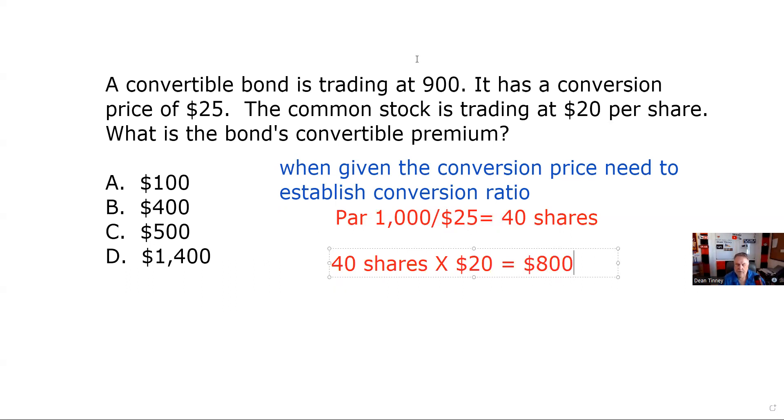So let's get that there. I just did, and let's put that in a different color. Let's put that in black. And what I just did is I did parity of the bond. And the way I did that was I took the number of shares, the conversion ratio, and I times it by the current market price of the convertible.